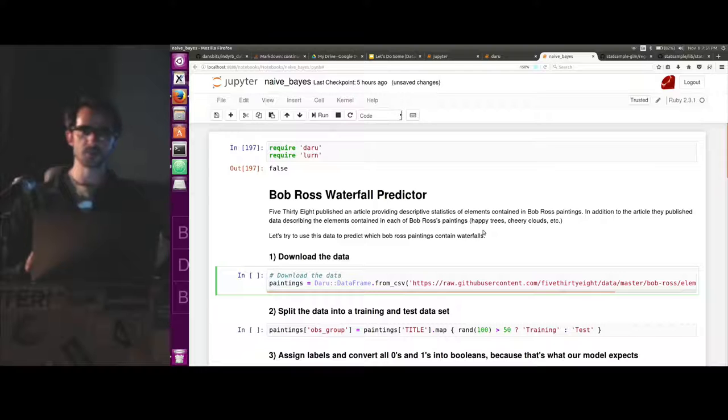So whether it has happy little trees, or like cheerful little clouds, or there's like, I think 70 variables for things that are in this. So let's try to use Naive Bayes to predict, based on the other things that are in a picture, whether it contains a waterfall.